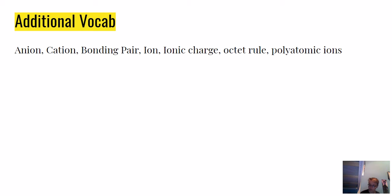Some additional vocab: Anions are a negatively charged ion. Cations are positively charged ions. Bonding pair: covalent bonding electron pair. Ion: an atom or molecule with a net electric charge due to the loss or gain of one or more electrons.